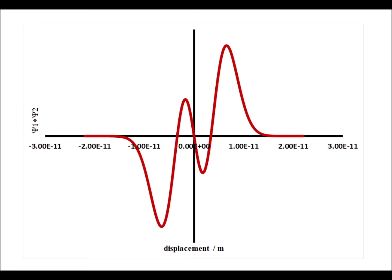Our second example is psi1 star psi2. Here we shade the graph of psi1 star psi2, showing two of the regions on the right in dark and two of the regions to the left in light. We see immediately by symmetry that these are equal and opposite, so the integral is equal to 0. We recognize this is a feature of a so-called odd function over an even interval.